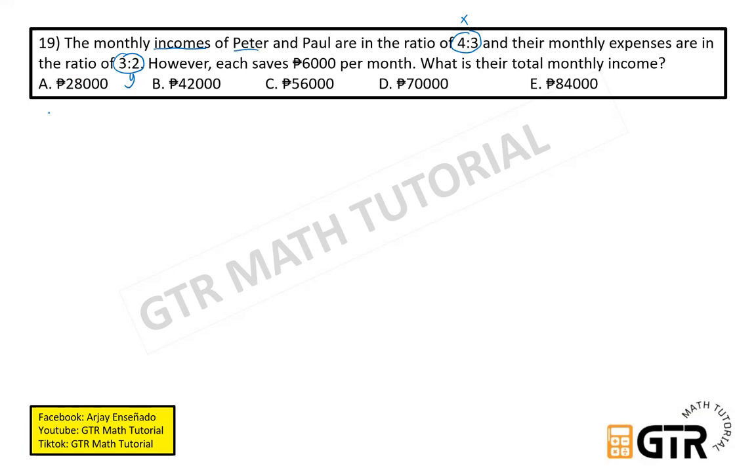This is also multiplied by the same number which might be different from the income ratio. Since that one is x, we'll use y here. To get their savings, we need to take the monthly income. Income, so this is their income. Peter and Paul. Peter's income is 4x and Paul's income is 3x. Then the expenses.